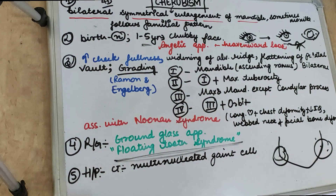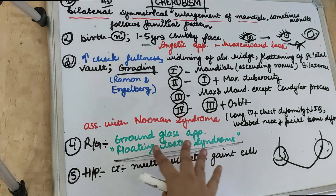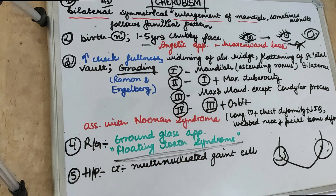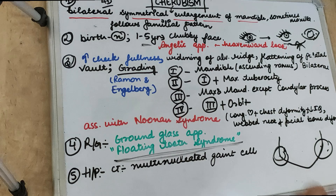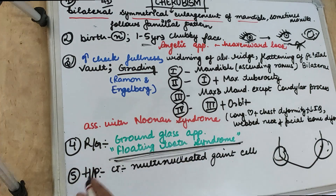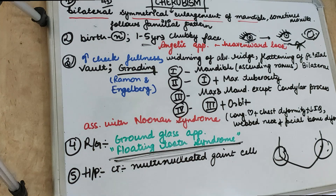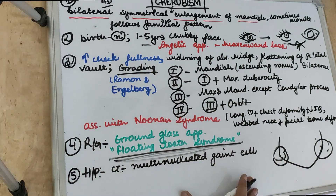On radiograph, in some cases there is a ground glass appearance, and we also see multiple unerupted teeth floating within the jaw — the floating tooth syndrome. Histologically, there is highly cellular and vascular connective tissue stroma containing fibroblasts and multi-nucleated giant cells.